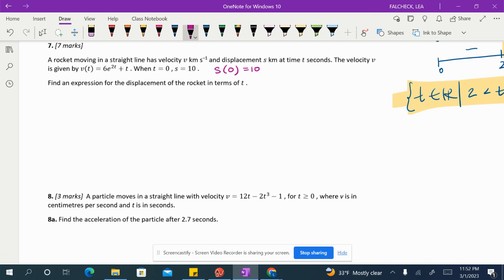This is a fancy way of telling us this. Okay, find an expression for the displacement of the rocket in terms of T. All right, so the displacement is just going to be the integral of the velocity. The velocity function is given above. So we're just going to integrate 6e^(2T) plus T dt.